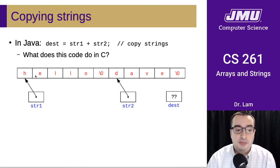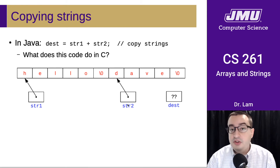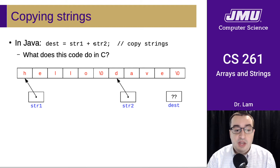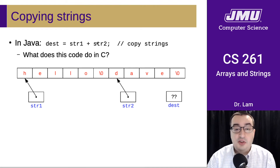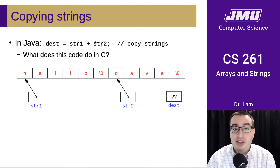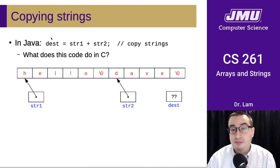They could be in entirely different places in memory. str1 is going to be some address in memory, str2 is going to be another address in memory, and when we add those two addresses together, that's just pointer arithmetic. We're taking the first address and adding the second address, and that's going to end up being some random place in memory that just happens to be the addition of the address of this string plus the address of this string. So destination is just going to be a pointer to some random place in memory.